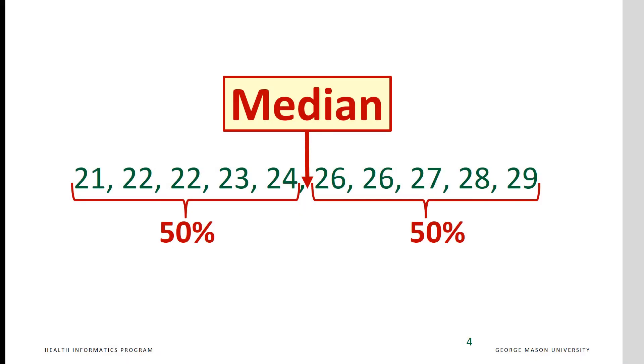The median is the middle value of a set of ordered numbers. 50% of data are above it and 50% below it. The calculation of median depends on whether we have an even or odd number of data points. For example, to calculate for an even number of data points shown here, the median is 25.